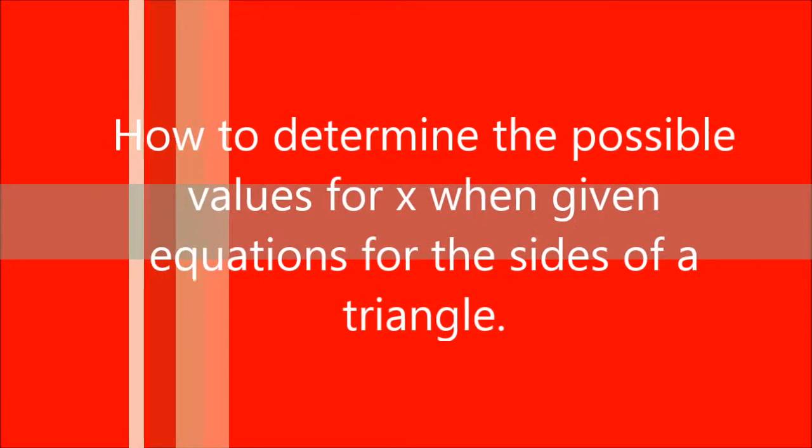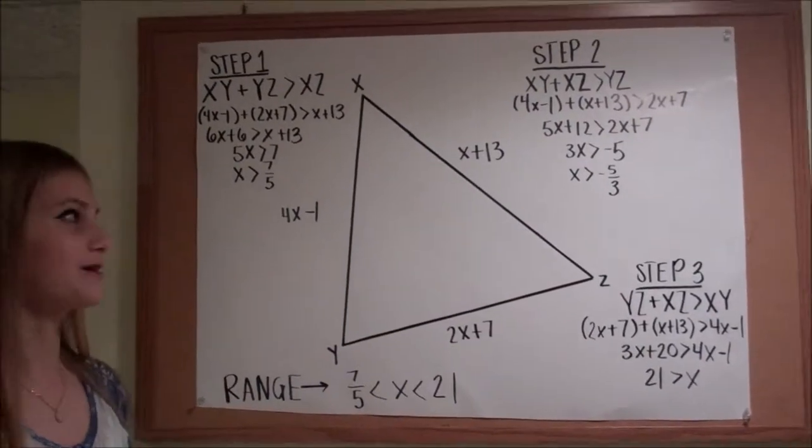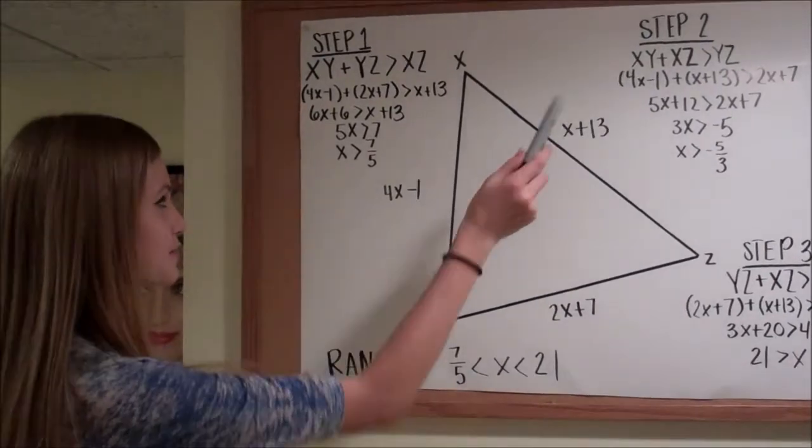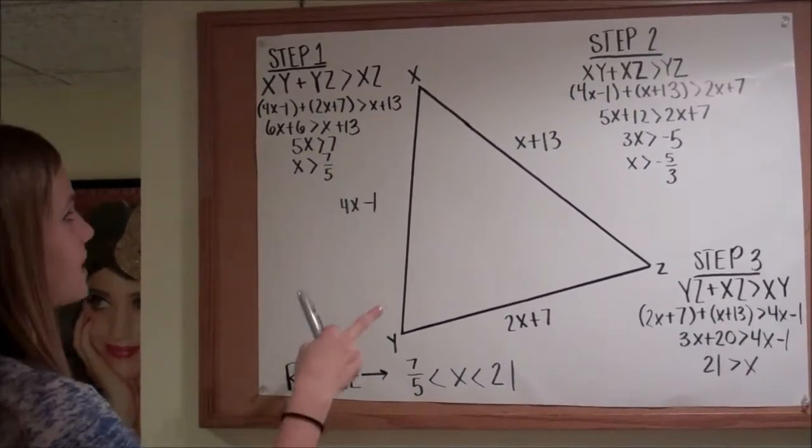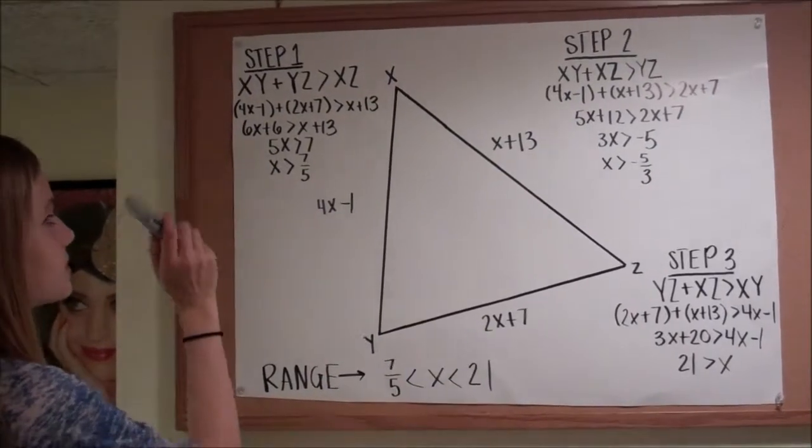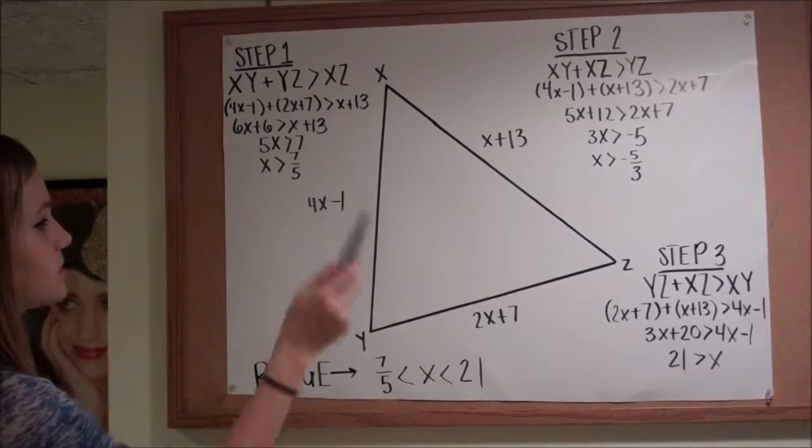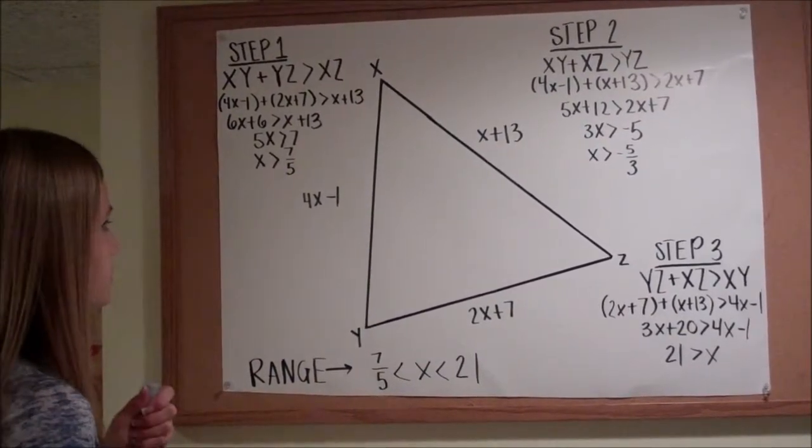How to determine the possible values for X when given the equations for the size of the triangle? When you're trying to find X on the segments of a triangle, you have to make sure that two sides are greater than the third side. So for your first step, you have to take two sides. XY plus YZ is greater than XZ. Then you plug each side into the equation, and you get X is greater than 7 fifths.